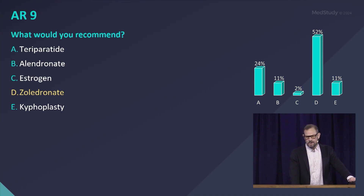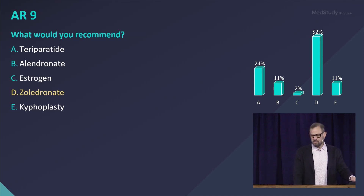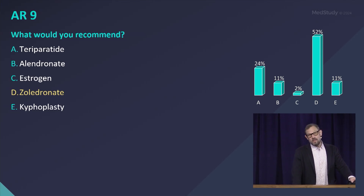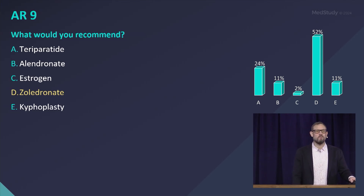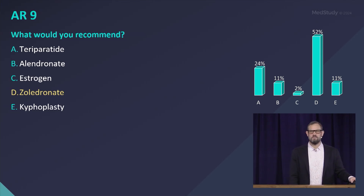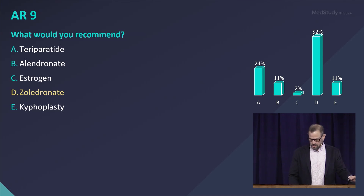Some of you were thinking about teriparatide — it's more expensive and not as well proven, so it's not a terrible answer, but zoledronate would be preferred. And then some of you were looking at kyphoplasty. The randomized trials of kyphoplasty compared to placebo do not show additional benefit, so it's a procedure we probably shouldn't be doing in the majority of patients with a vertebral fracture. That's where you put cement — you inject it directly into the vertebrae.